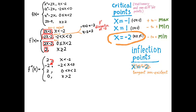The next place where f double prime changes sign is at 0, changing from negative to positive. So x equals 0 is an inflection point. Does f double prime change sign again? No — going from 2 to 0 is not a change of sign because 2 is positive and 0 is neither positive nor negative. A sign change would be from positive to negative or negative to positive; going from positive to 0 does not qualify. So there's only one inflection point at x equals 0. Notice that we have an inflection point where f double prime does not equal 0, and we have f double prime equal to 0 where there's no inflection point — the inflection point doesn't automatically happen whenever f double prime equals 0.